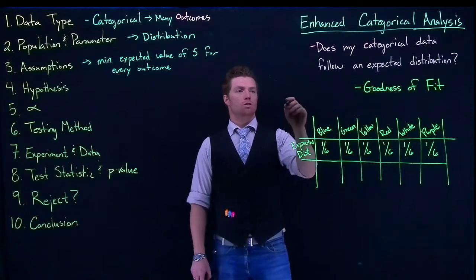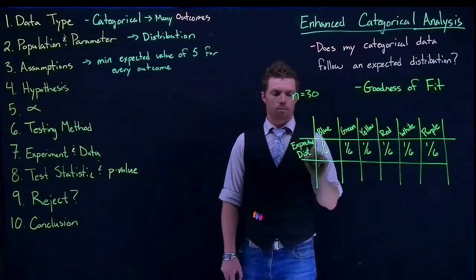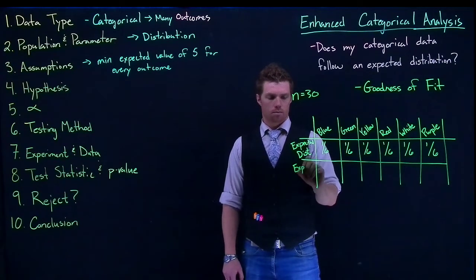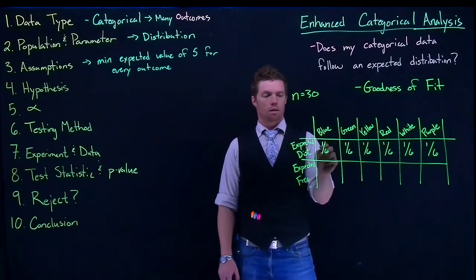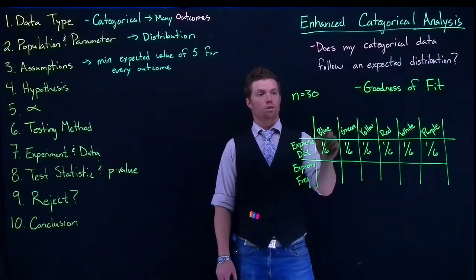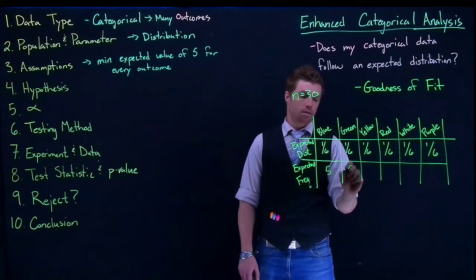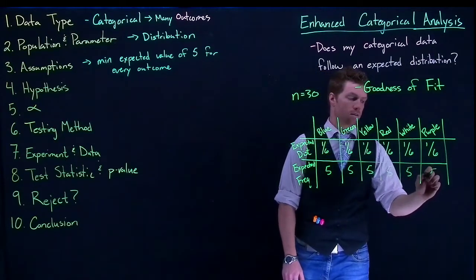Okay, so let's suppose that it took a sample of n equals 30. So then my expected frequency is just the expected frequency of blue multiplied by our sample size. So that would give me five, five, five, five, five, and five.